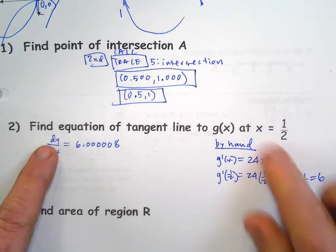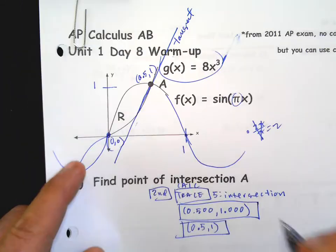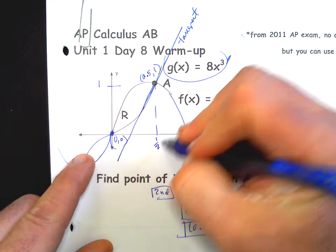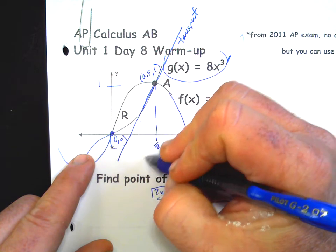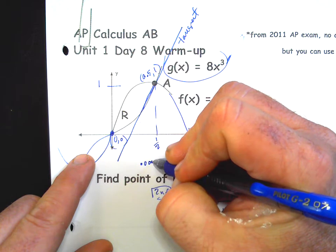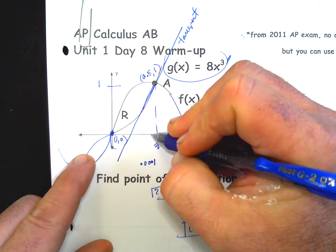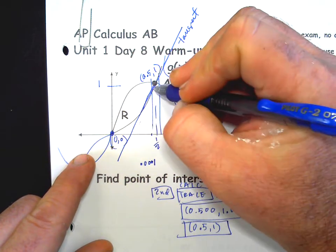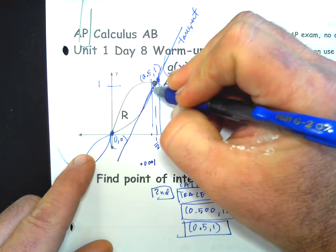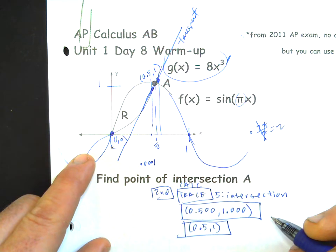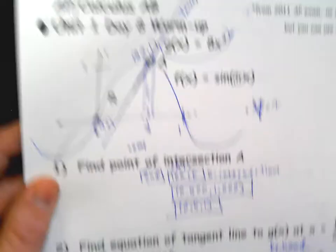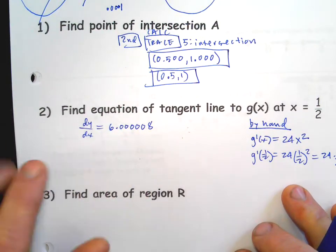That's going to be 24 times one fourth, which is exactly six. So it's actually supposed to be exactly six. Our calculators don't do this. Our calculators take a point zero zero zero zero one away from it on either side, then they calculate those points on the curve and they connect it with a secant line. That's a rough estimate for getting the derivative. That's how your calculator does it, that's why it's not perfect.